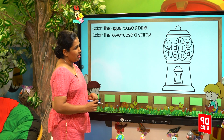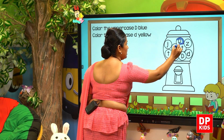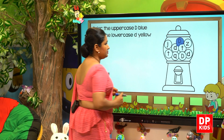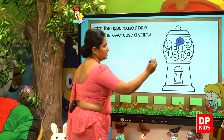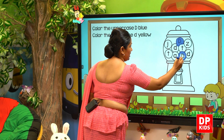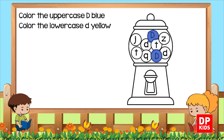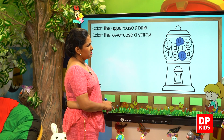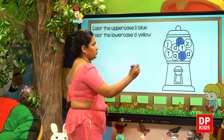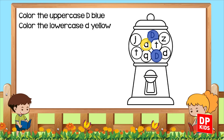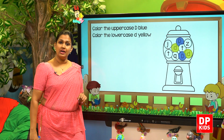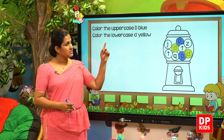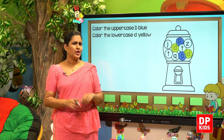Here you can find capital D. We colour it in blue. Are there any more capital Ds? Yes. And we colour it in blue. Now we want the simple D in yellow colour. We colour it in yellow. Another one. Another simple D. So here we coloured capital D in blue and simple D in yellow colour.